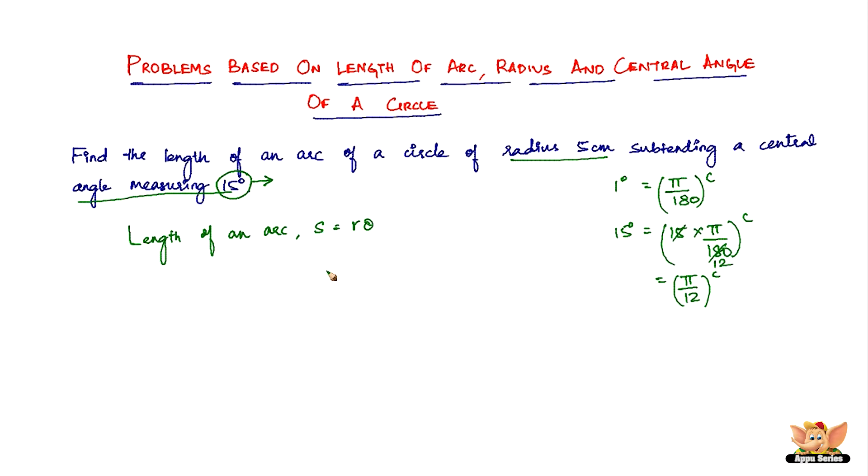So now that we've converted 15 degrees into radians, we can substitute the value of r and theta in this formula and find the length of the arc. So s equals r is 5 cm times pi by 12. So this is the required answer. You can of course calculate the exact length by substituting the value of pi, but this should suffice.